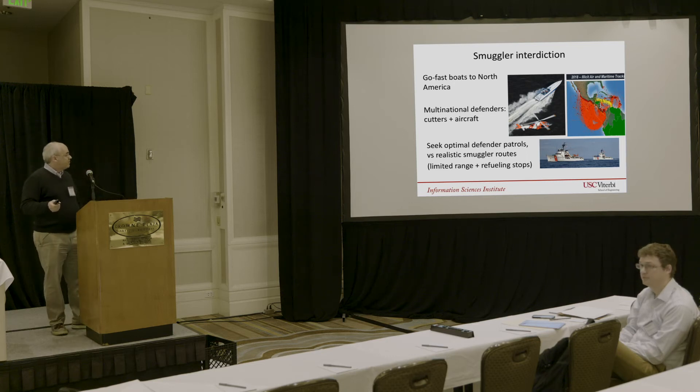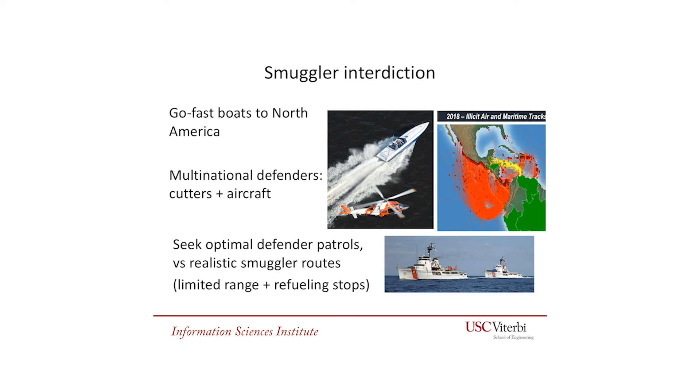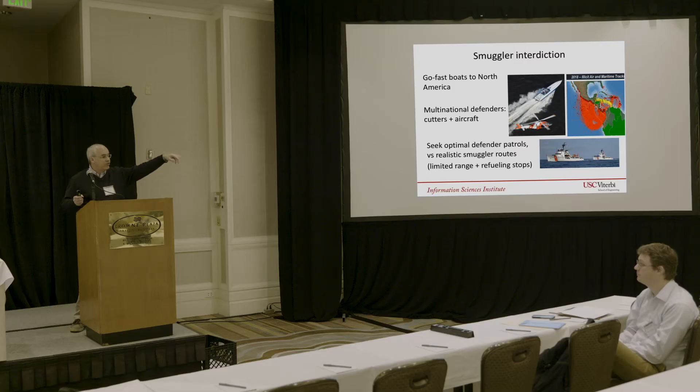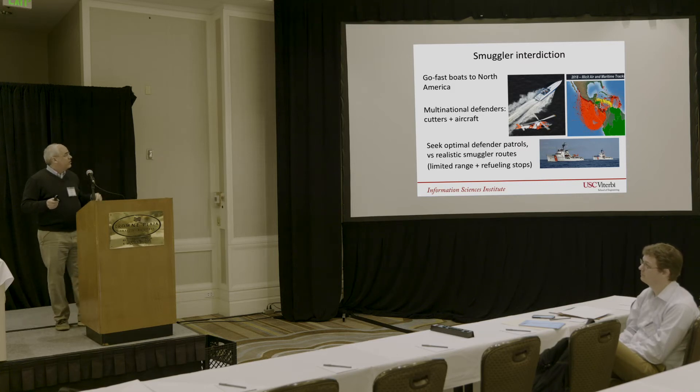We looked at the problem of smuggler interdiction, where drug smugglers bring cargo from South America to the coast of North America, typically along Mexico, predominantly using go-fast boats which can travel about 80 knots on clear waters, maybe 35 knots on choppy seas. The defenders are multinational coast guards with slower craft and helicopters. We want to find an optimal route for defenders in this coordinated system against realistic attacker models. The picture on the right shows routes taken in 2018 by smugglers—they go far out to sea around the Galapagos Islands, and they don't have enough fuel for that, so they must find refueling points on the way.